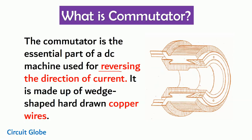The commutator is made up of wedge-shaped hard-drawn copper wire. Hard-drawn copper wire means the wire is drawn in such a way so that they provide great strength and hardness to the machine. Here you can see in this image, the commutator is constructed by using a number of copper wires and these wires are insulated from each other by using a thin sheet of mica.